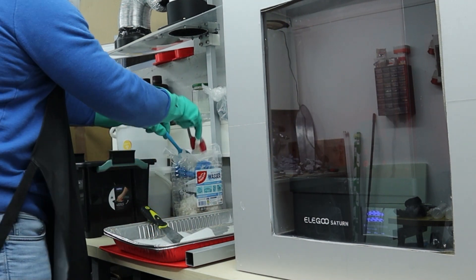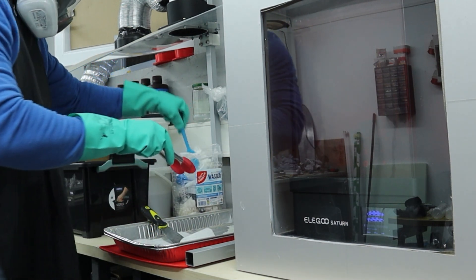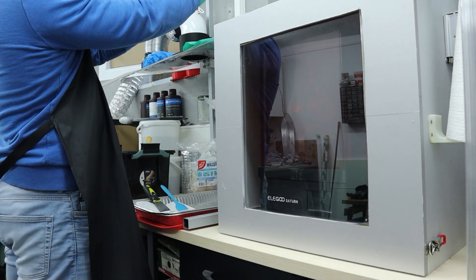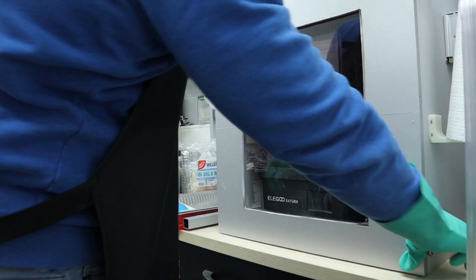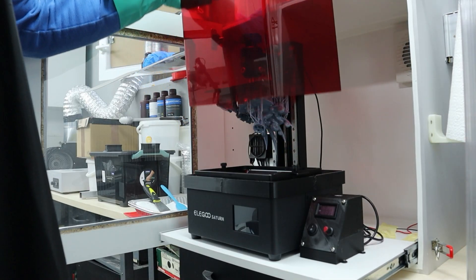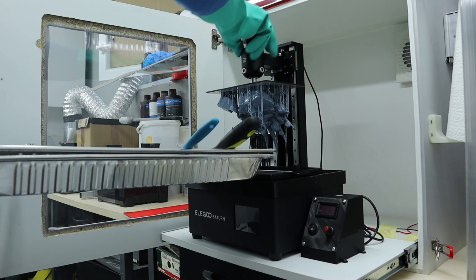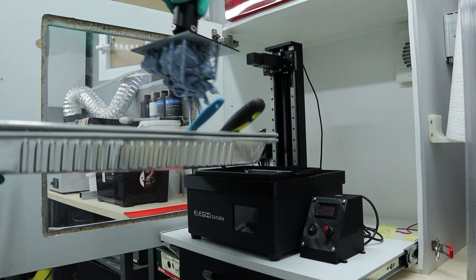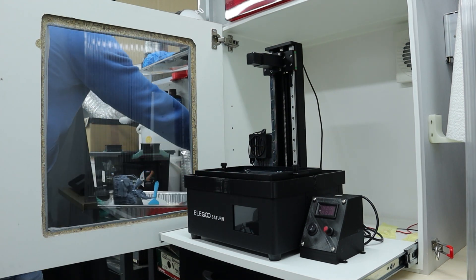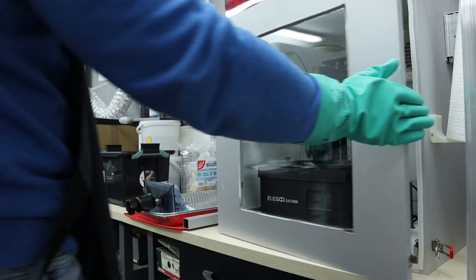When the printer is done I re-glove and allow the fan to extract fumes for a few minutes before opening the door. While holding the pan as close as possible to the vat I ensure that no resin drips onto the printer or the floor.